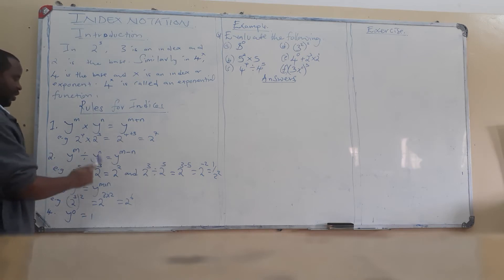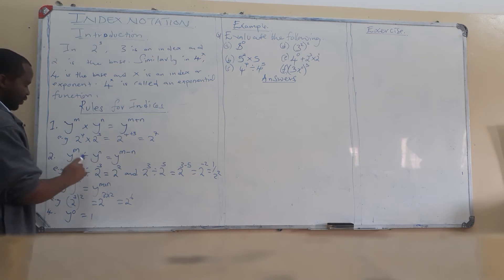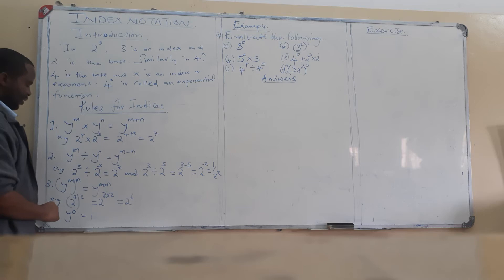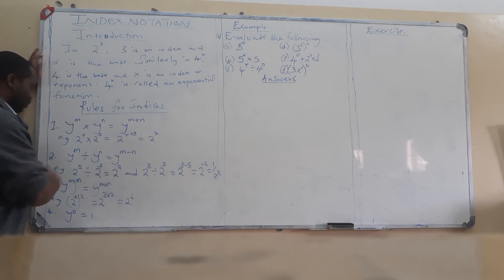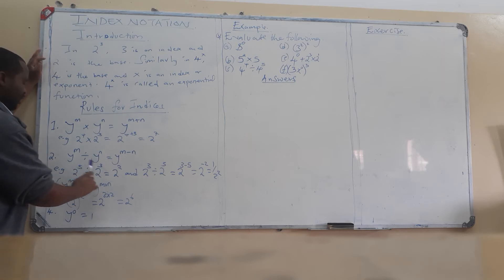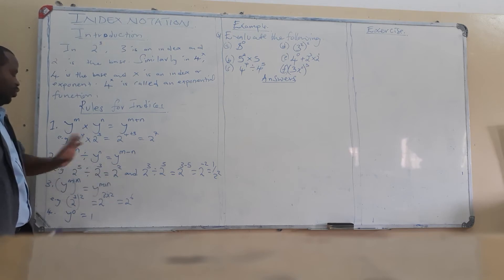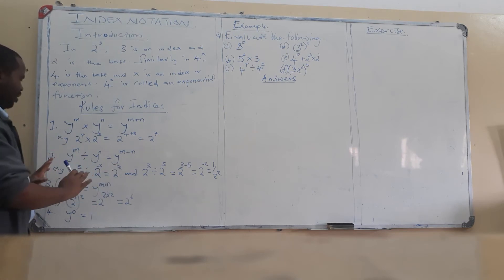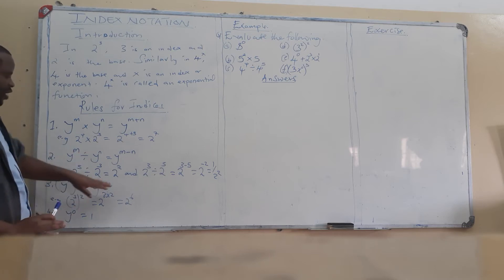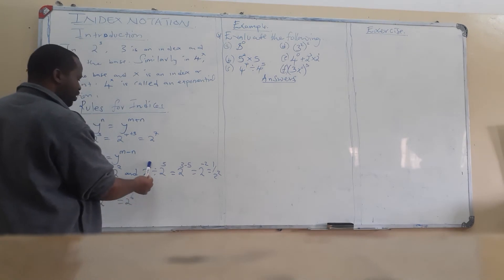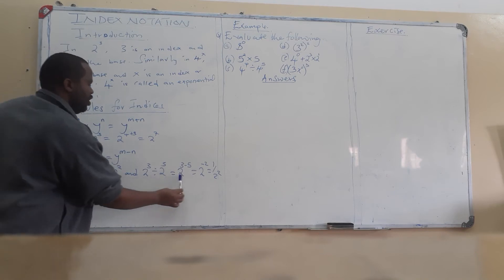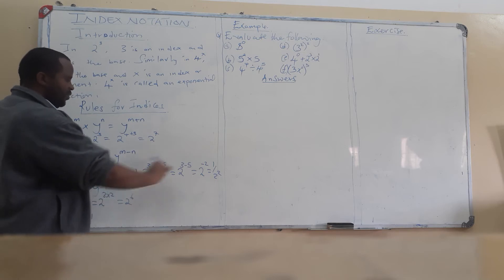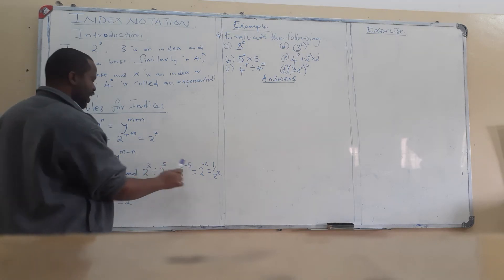An example: 2 to the power 5 divided by 2 to the power 3. We keep the base, which is 2. Our powers are 5 and 3, so 5 minus 3 gives us 2. The answer is 2 to the power 2 if we are expressing the answer in exponent form.